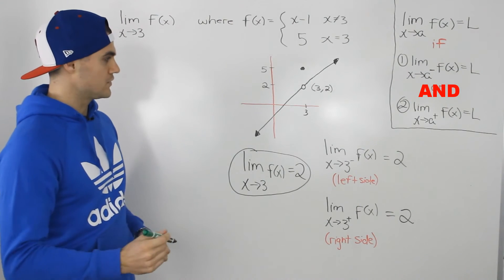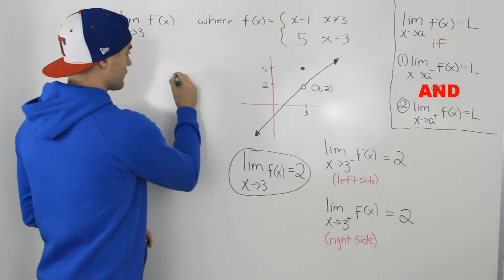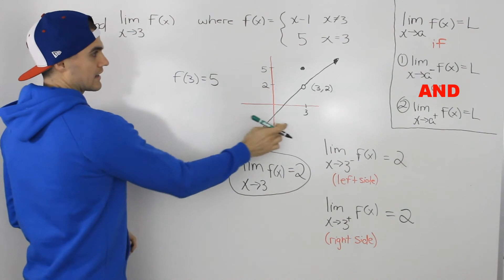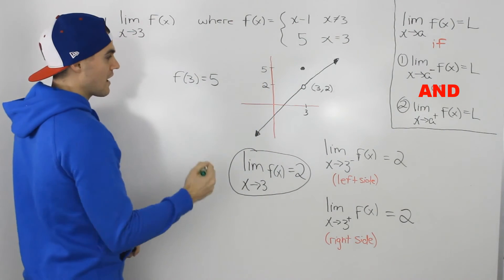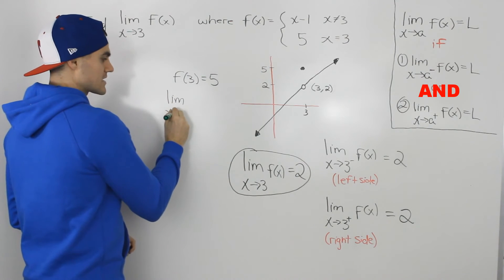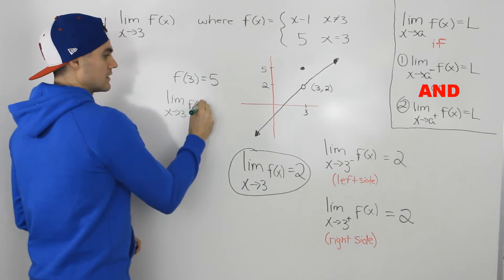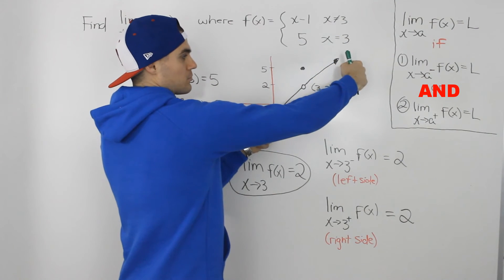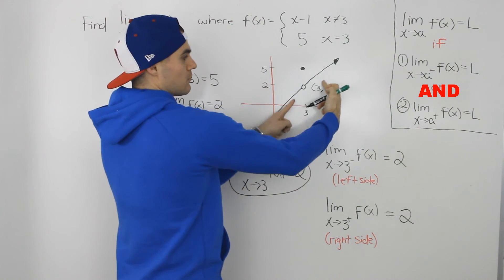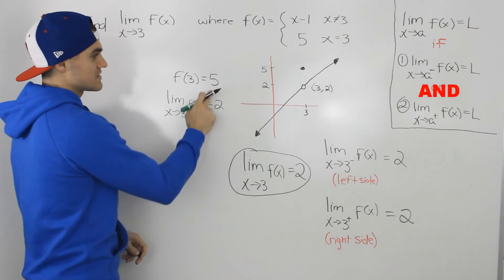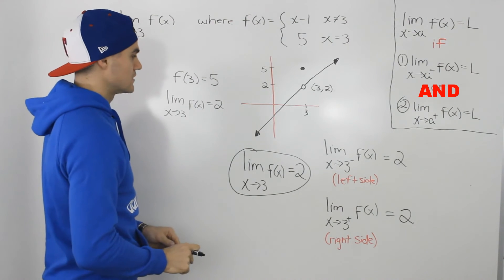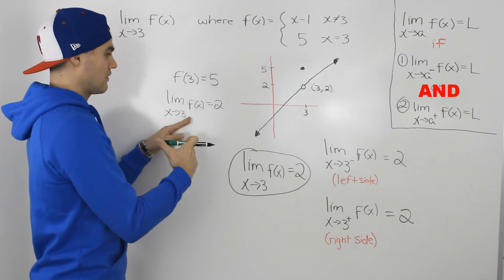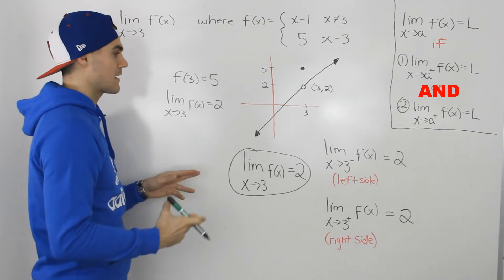So that's our final answer. Notice how f of 3 is equal to 5, because at an x value of 3 this function is defined at a y value of 5. But the limit as x approaches 3 of this function is equal to 2, because it's all about the y value that the function is approaching as we approach that x value of 3 from both sides. The function can be defined at a different y value than what the limit of that function is at that same x value.